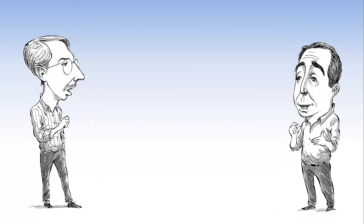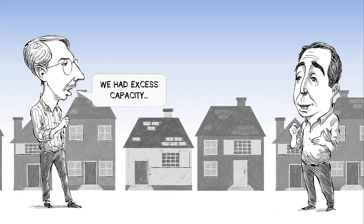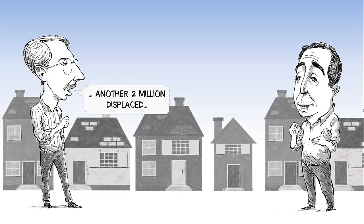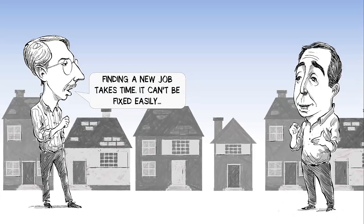In addition, we had excess capacity in construction, because at the peak of the cycle we had 2.2 million new housing units being produced, and the normal number is only 1.5 million. That ratio — 2.2 to 1.5 — represents excess capacity in construction, probably another 2 million workers. By our reckoning, we've got a record number in excess of 5 million, maybe as many as 6 million, permanently displaced workers. Dealing with that pathology is extremely difficult — it's not amenable to either fiscal or monetary policy.